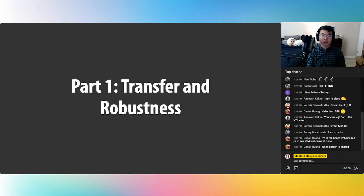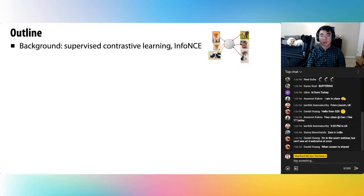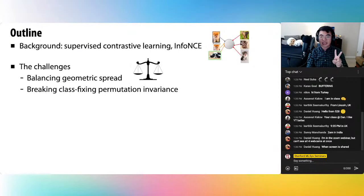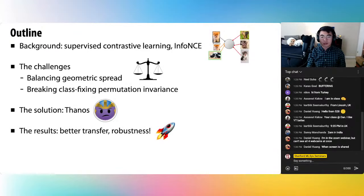Let's start with part one: improving transfer and robustness of supervised contrastive learning. I'll give some background about contrastive learning, both supervised and unsupervised kinds, and how we got interested in the transfer question. Then I'll talk about two technical challenges in getting a good representation with supervised contrastive learning, followed by the components of our solution, which we call Thanos, and the theoretical guarantees on how it addresses those two challenges. Finally, I'll evaluate Thanos on transferability and robustness.